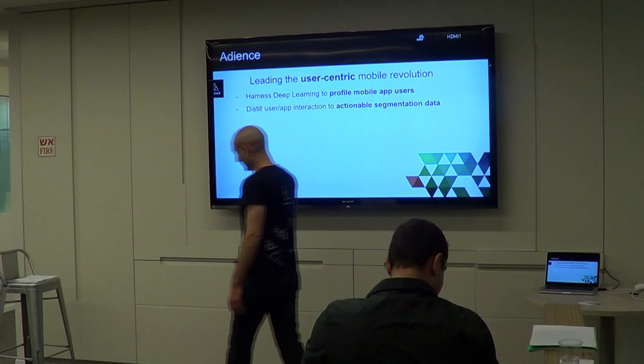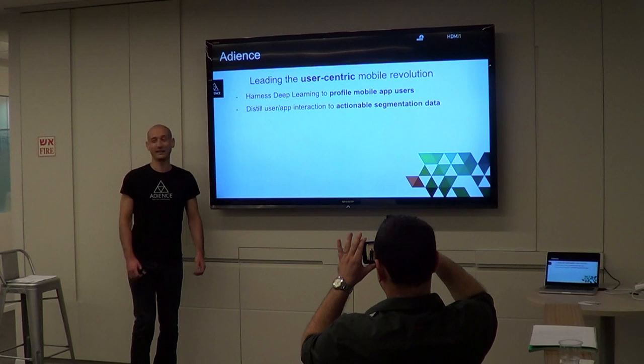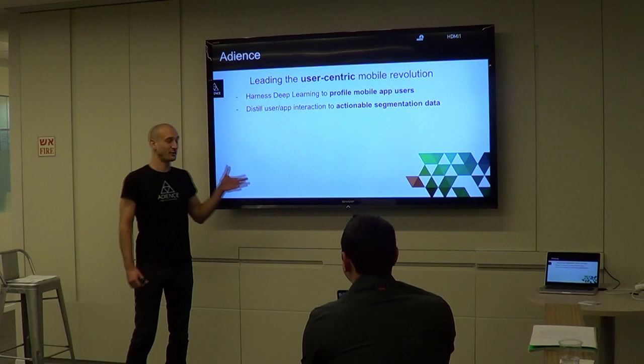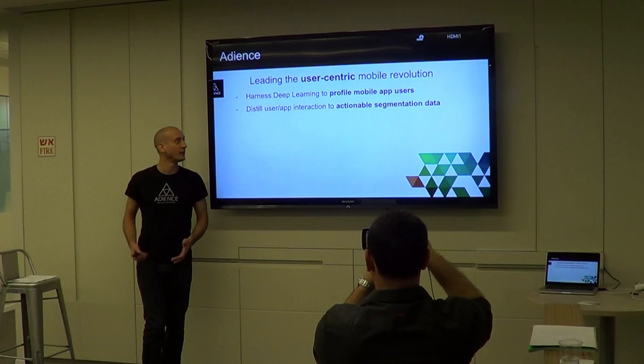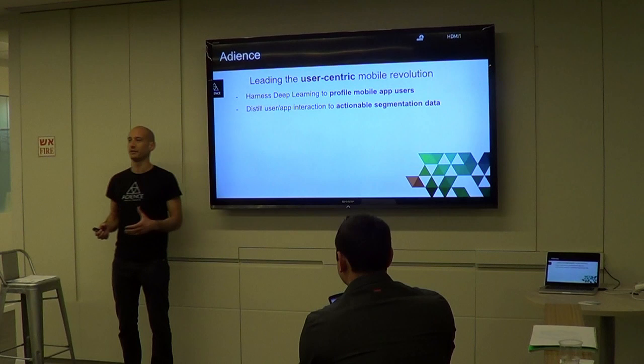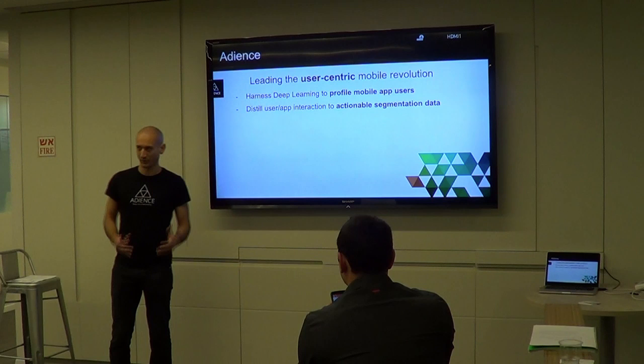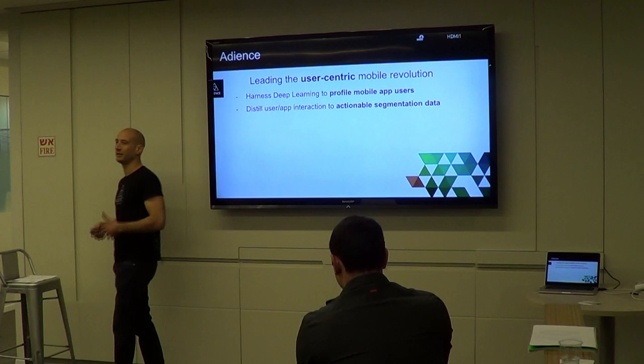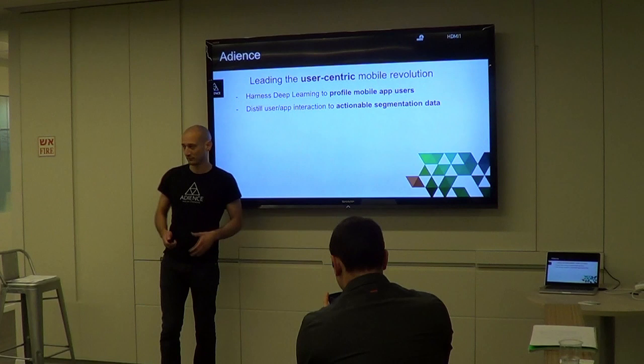First of all, what Allianz is all about. We're leading the user-centric mobile revolution - what that means is we want to harness deep learning and other machine learning techniques to profile mobile app users. We want to know as much as we can about native mobile app users, distill the user-app interaction, and get actionable segmentation data that can actually be used by application developers.